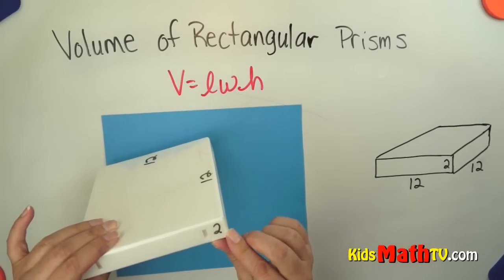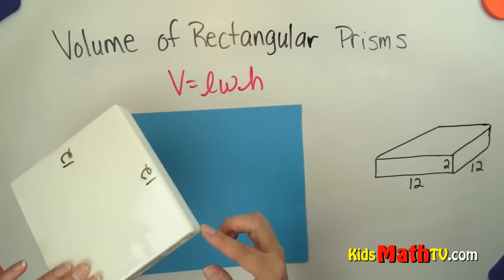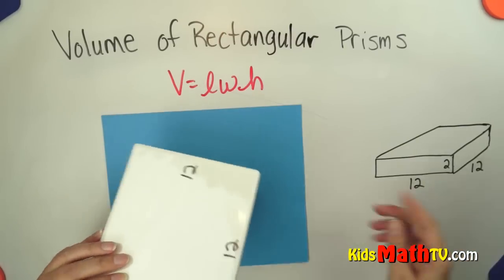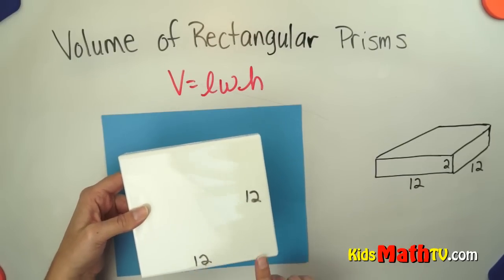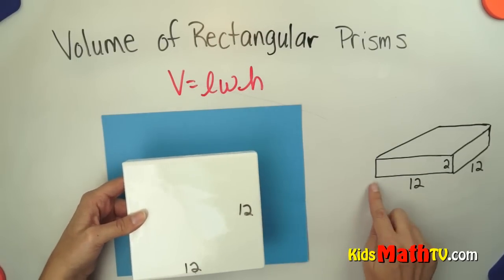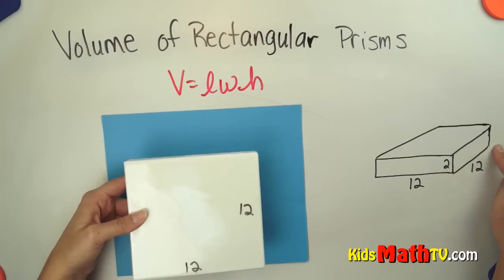We're going to call this 2 centimeters here as the height. You can see that in our picture as well. And then this rectangle, or square in this case, it's a special rectangle, is 12 centimeters by 12 centimeters. So we have 12 centimeters by 12 centimeters.